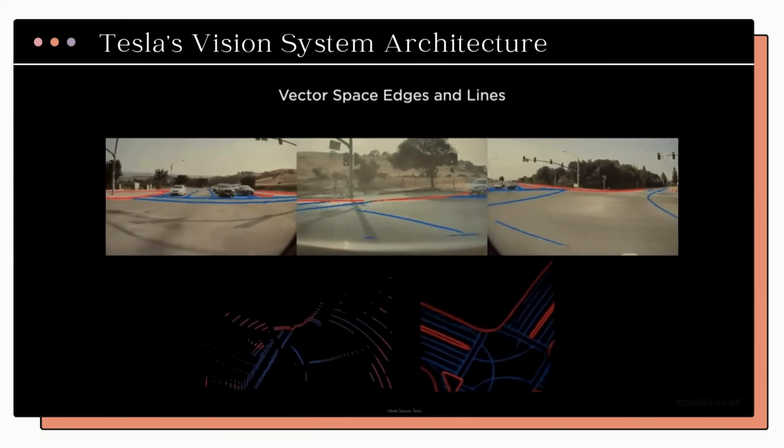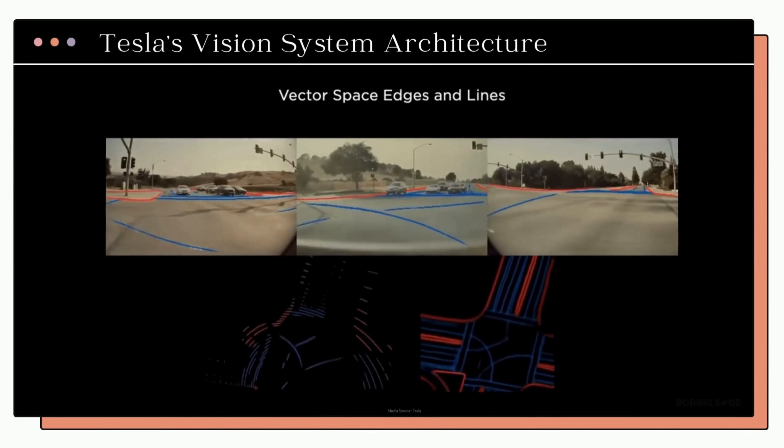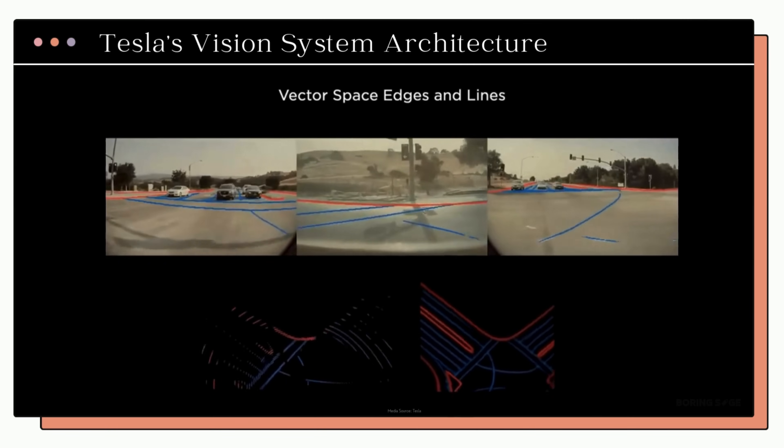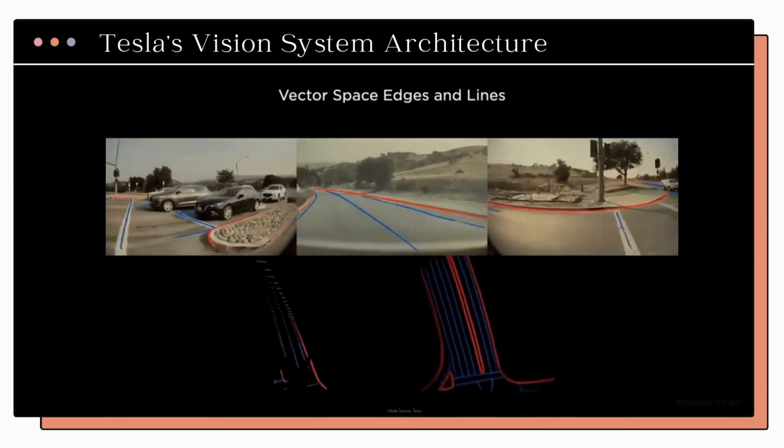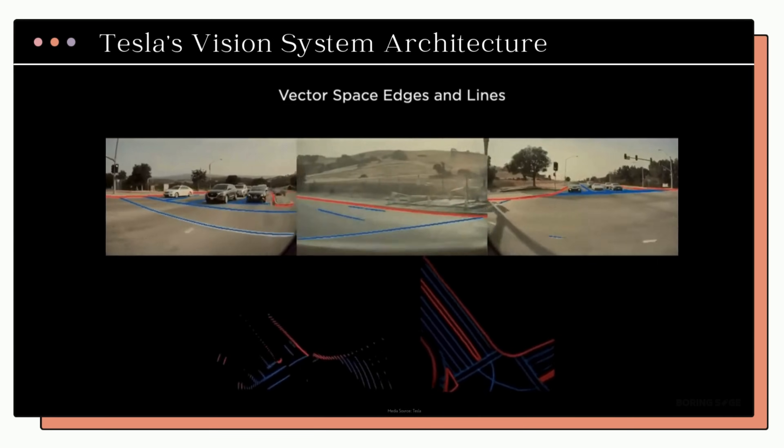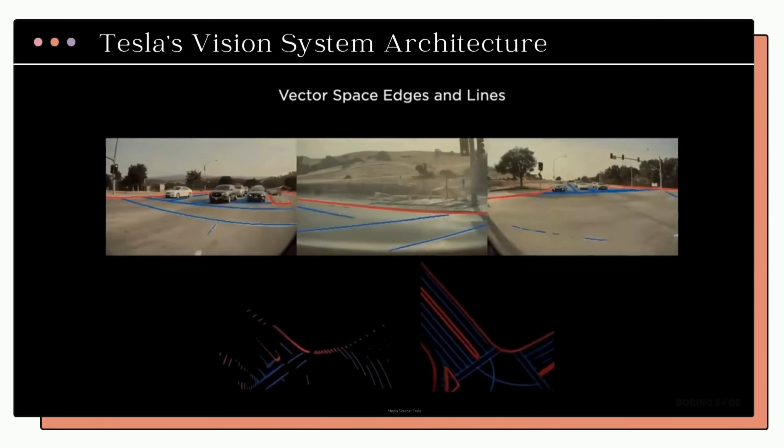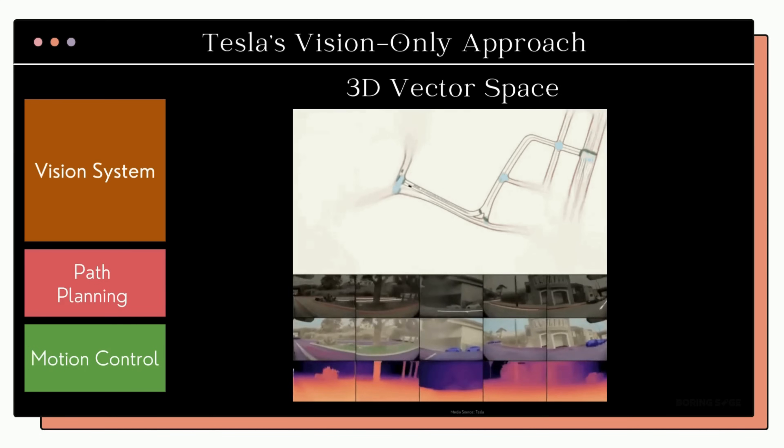This 3D vector space allows Tesla's FSD system to see and understand obstacles, pedestrians, and other vehicles as if it's in a virtual simulation of the real world. This detailed view makes driving decisions more accurate, especially in complex environments like city streets.